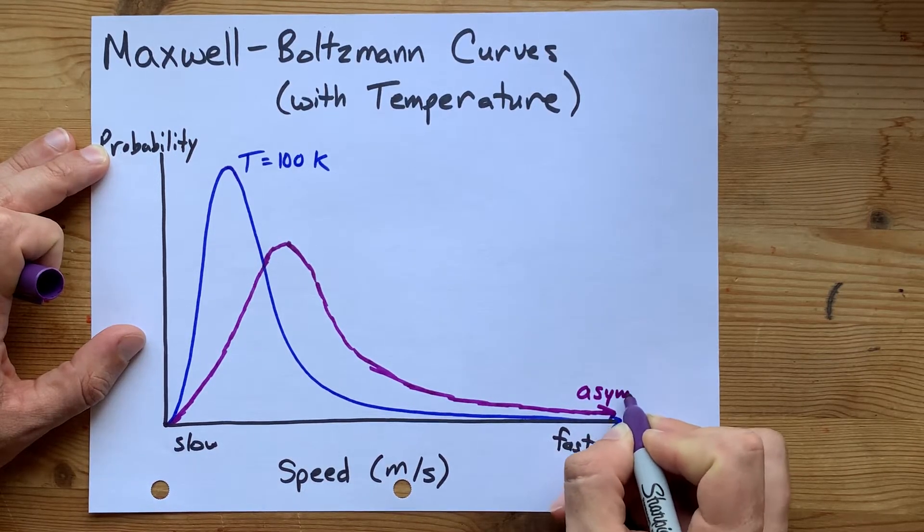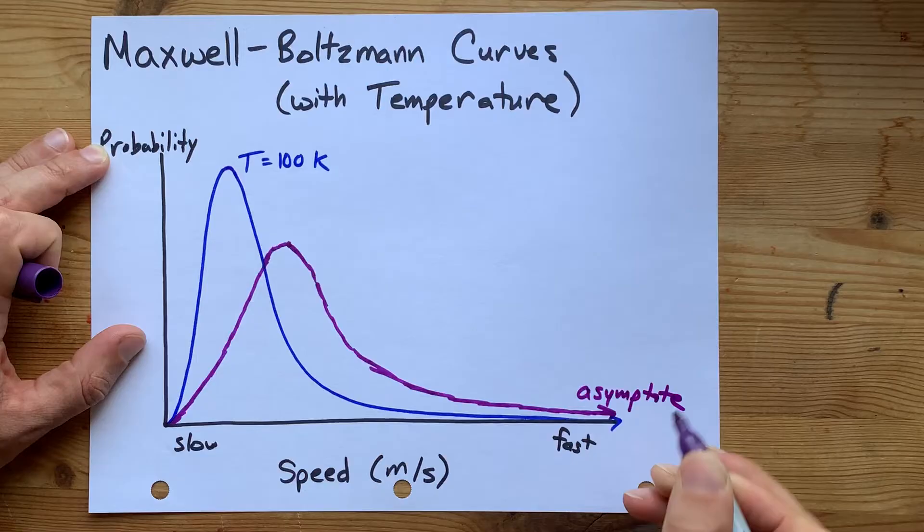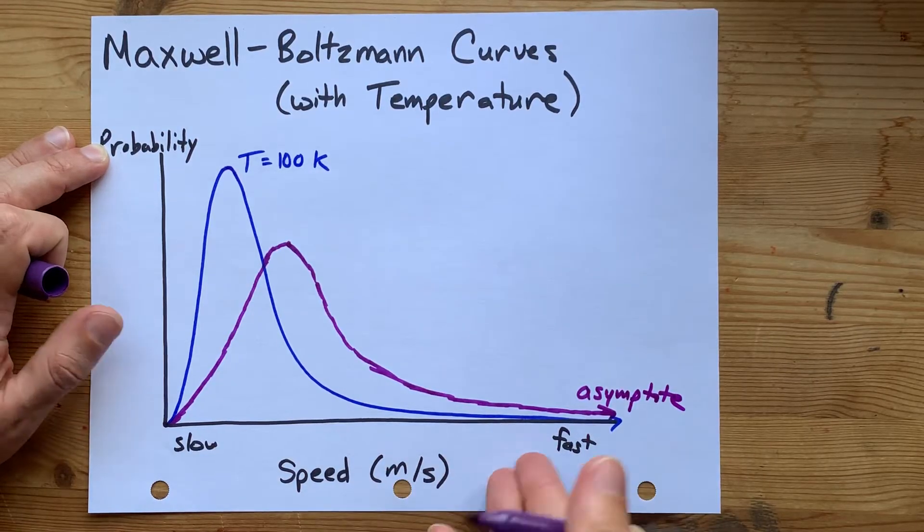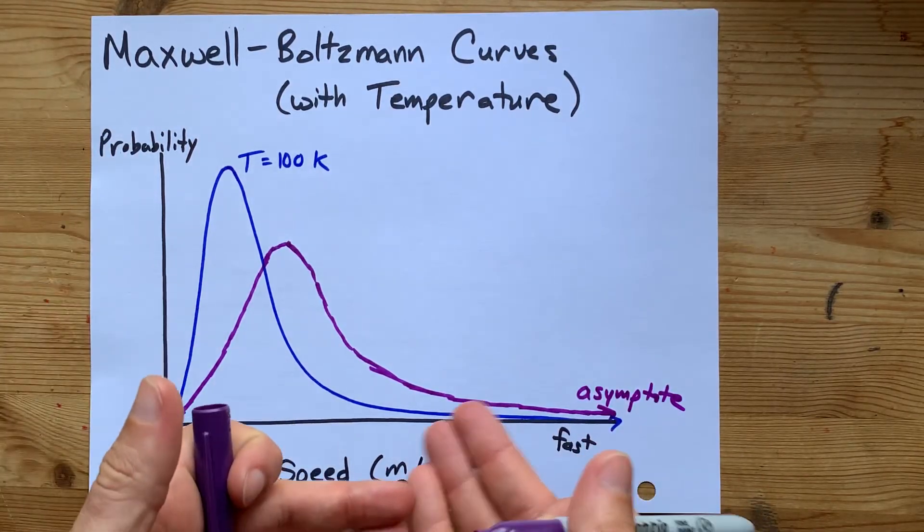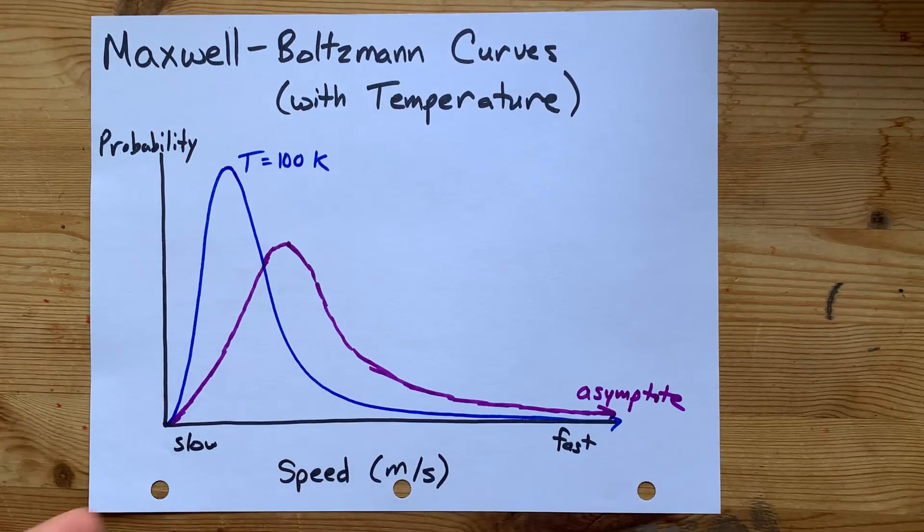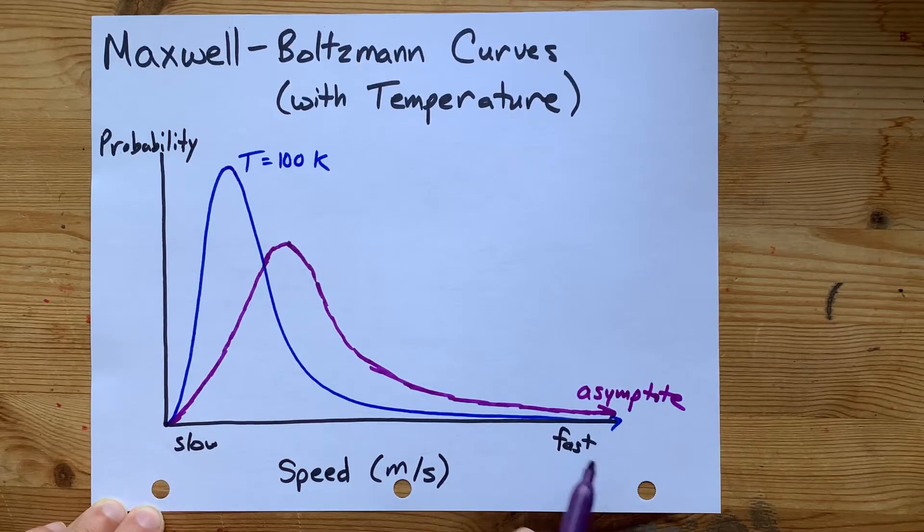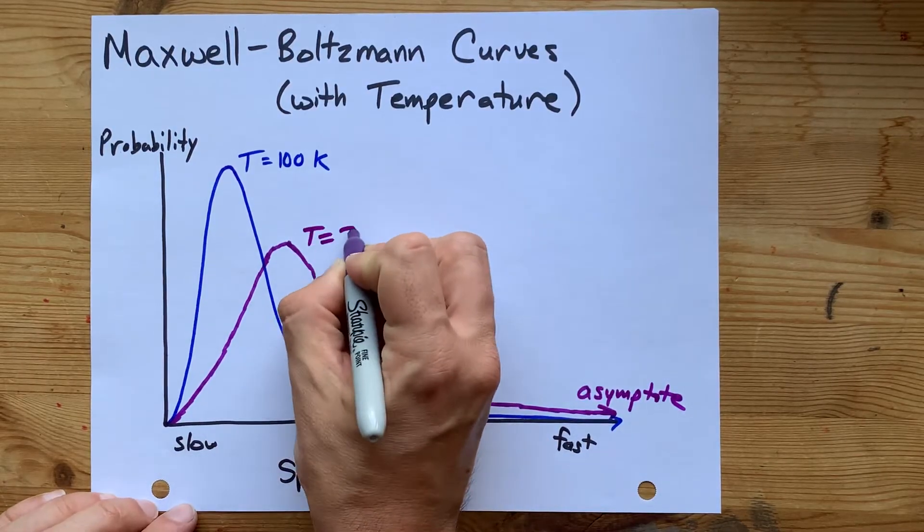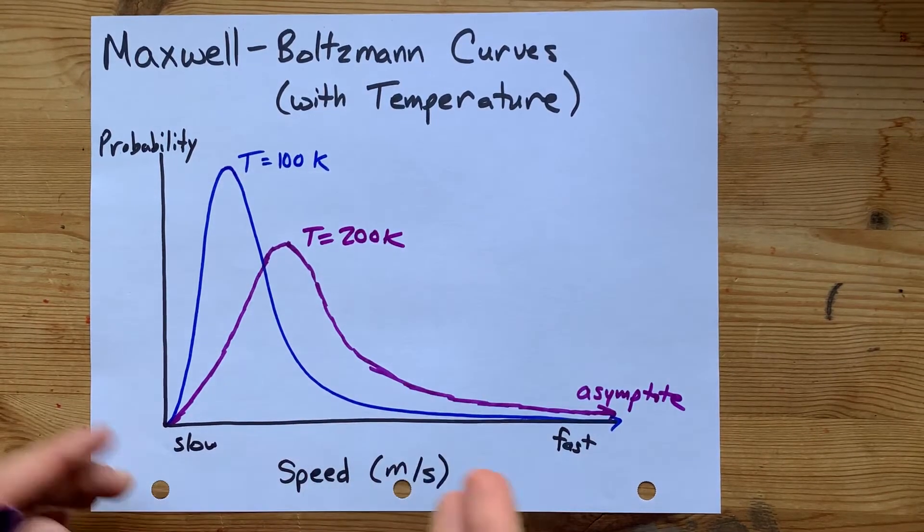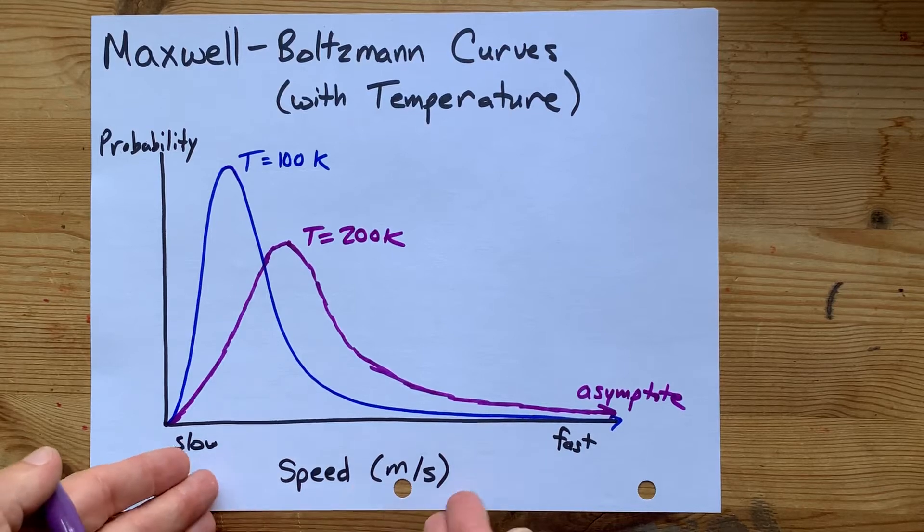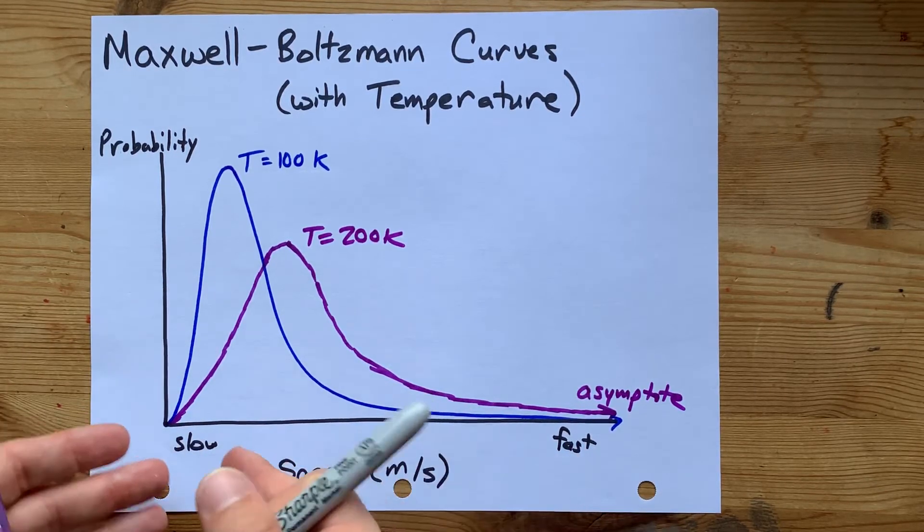This is technically an asymptote. And I know it's impossible for the speed of a molecule to be like the speed of light or something. But the point is you get less and less probable to be traveling faster at any particular temperature. If I double the temperature, maybe on average the speeds increase. Well, they will.